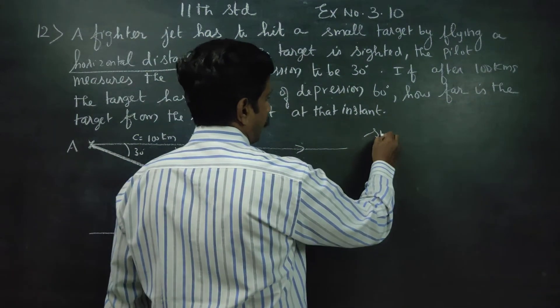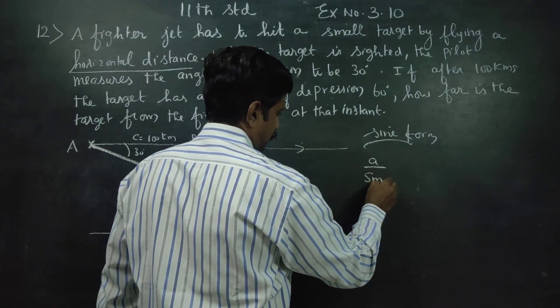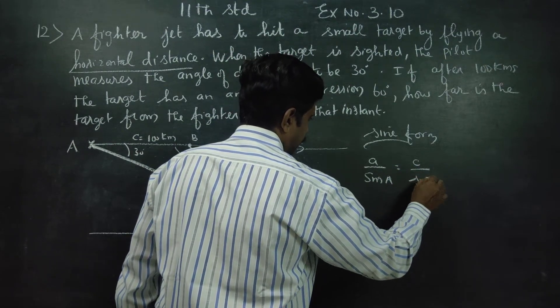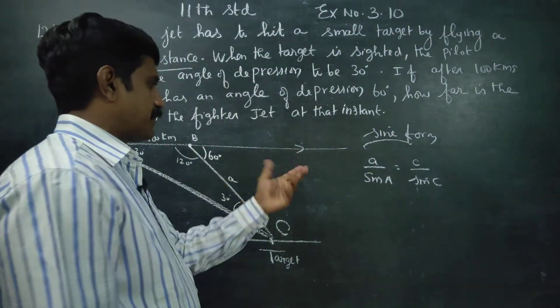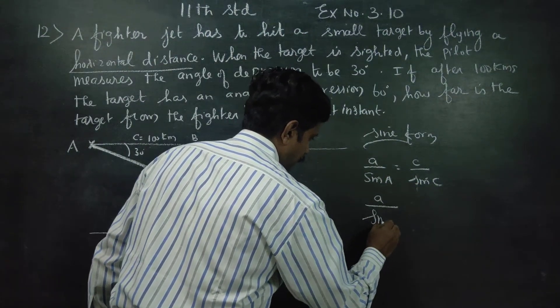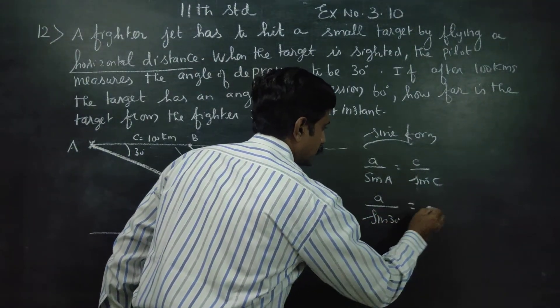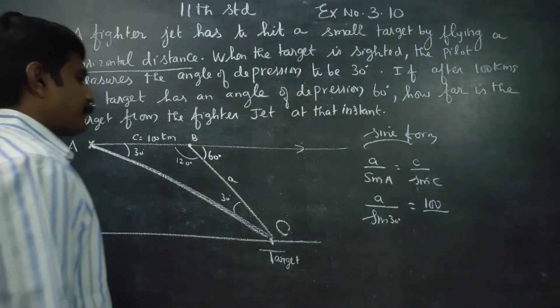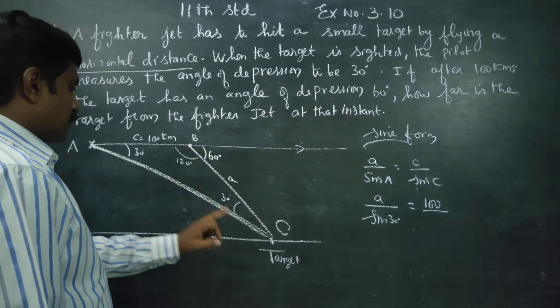We can use the sine formula. What is the sine formula? a/sin A = b/sin B = c/sin C. What is my a? Side a divided by sin A, which is 30 degrees, equals c, which is 100, divided by sin C. Angle C is also 30 degrees.